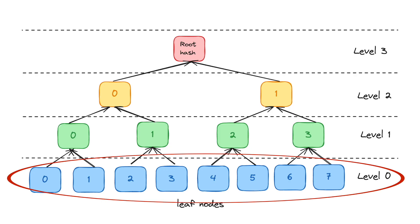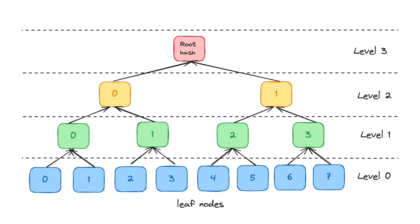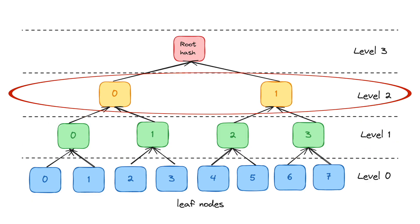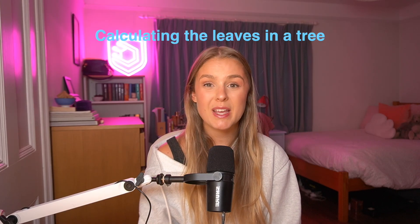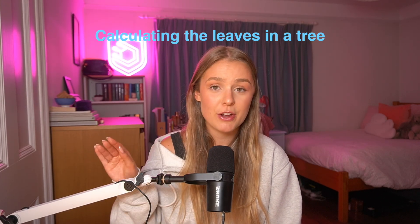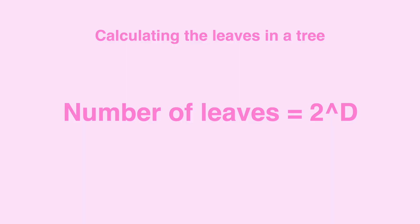In a depth-three tree we have leaf indices zero through seven. We have levels zero through three. At level one, intermediate nodes have indices zero, one, two, three; at level two, indices zero and one; and then the root hash at level three. Given a certain tree depth d, we can calculate how many leaves there will be using the equation: number of leaves equals two to the power of the depth. This is intuitive since adding a level to the tree doubles the number of leaves, because every intermediate node has two child nodes.